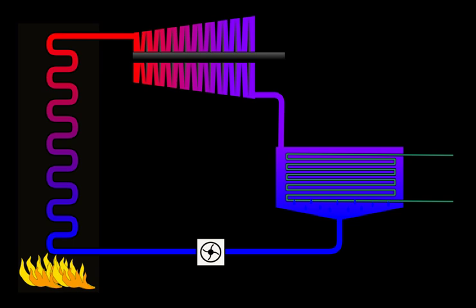In an ideal Rankine cycle, the pump and turbine would be isentropic. That is, the pump and turbine would generate no entropy and hence maximize the network output. Processes 1-2 and 3-4 would be represented by vertical lines on the TS diagram and more closely resemble that of the Carnot cycle. The Rankine cycle shown here prevents the state of the working fluid from ending up in the superheated vapor region after the expansion in the turbine, which reduces the energy removed by the condensers.